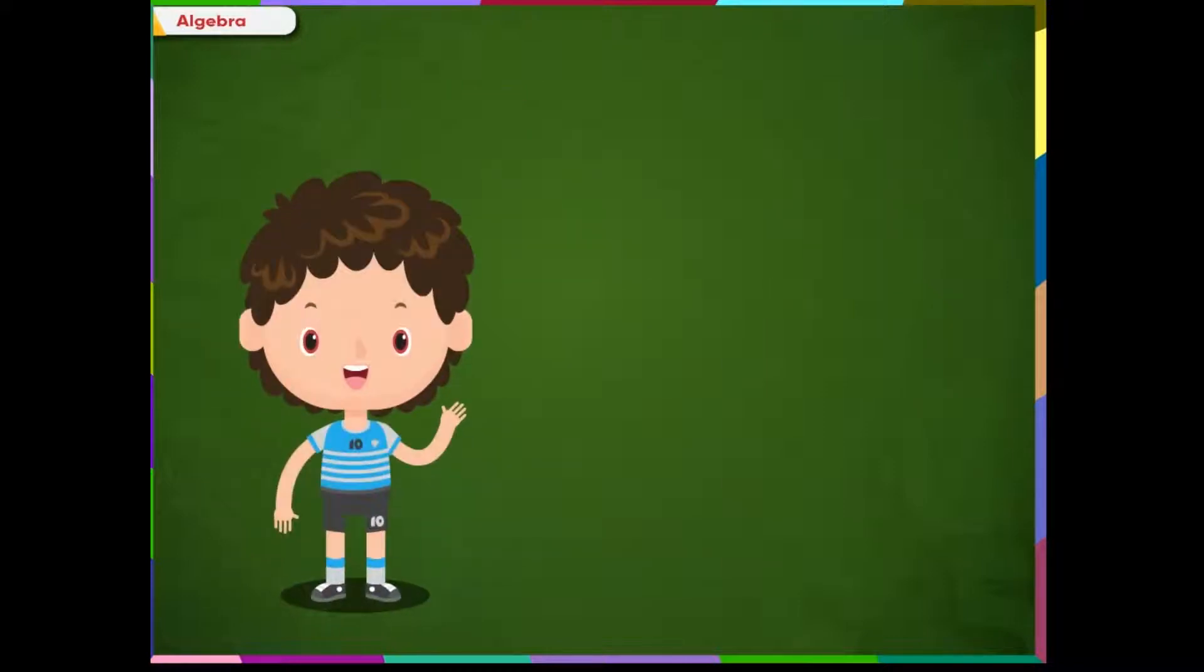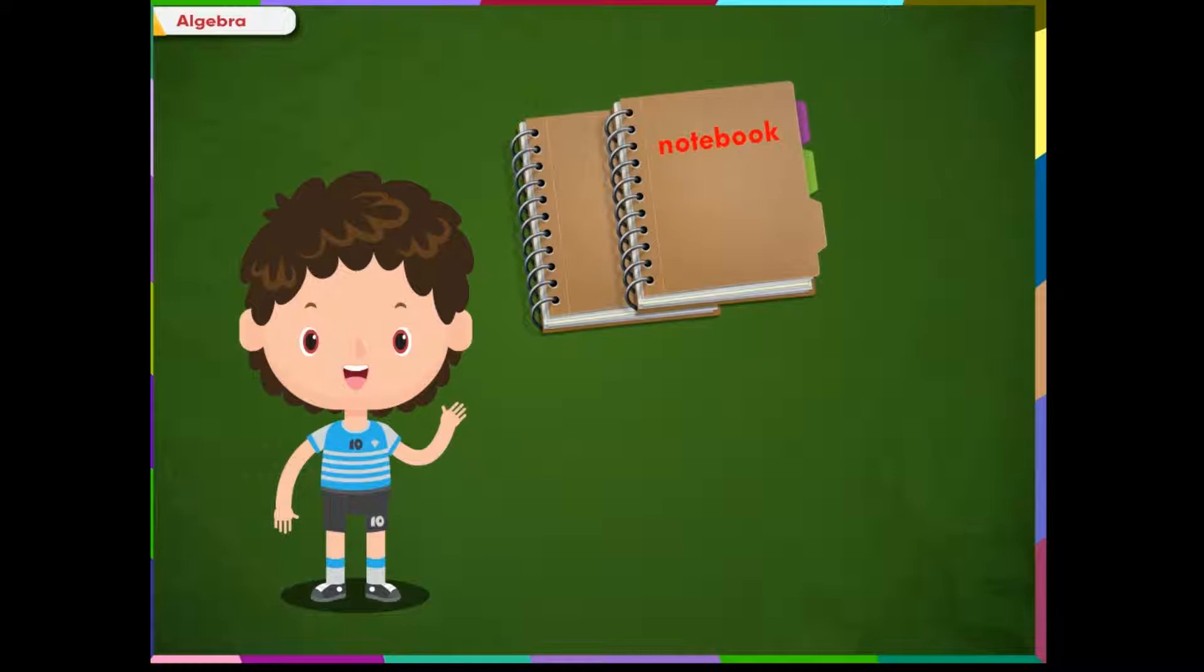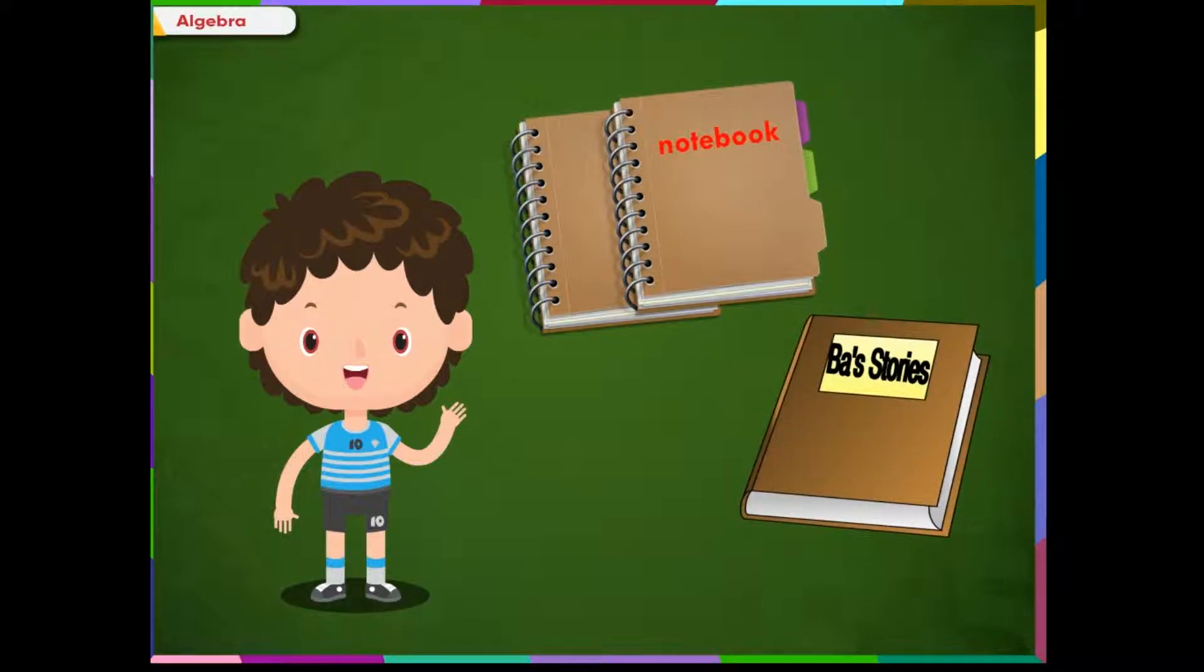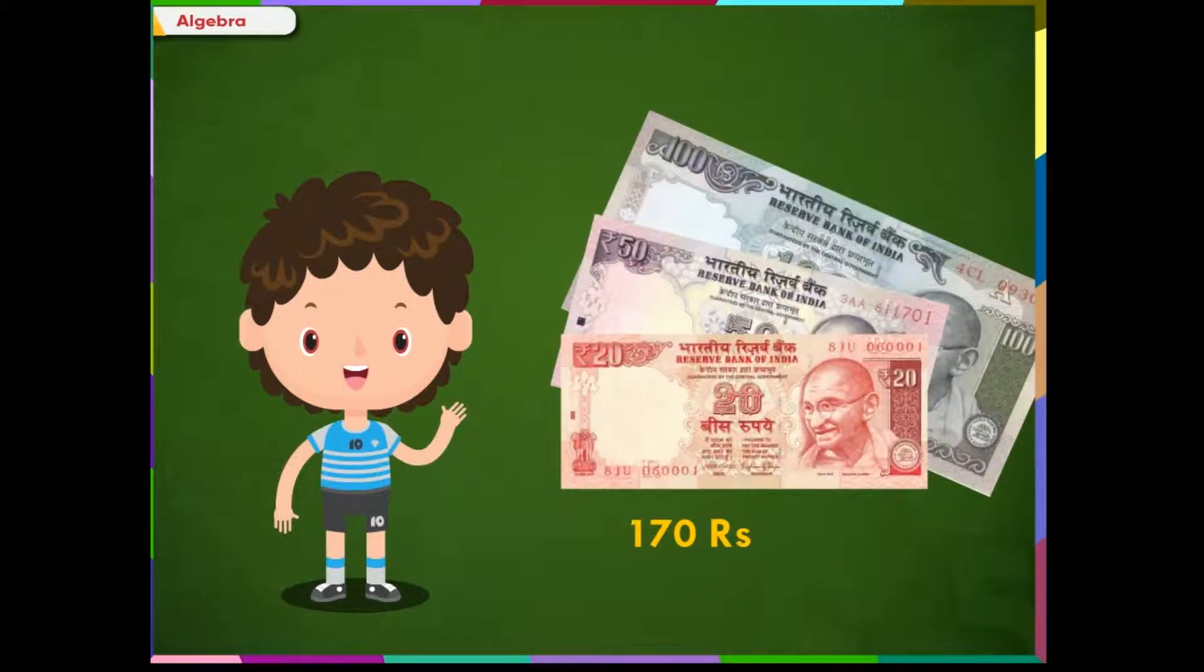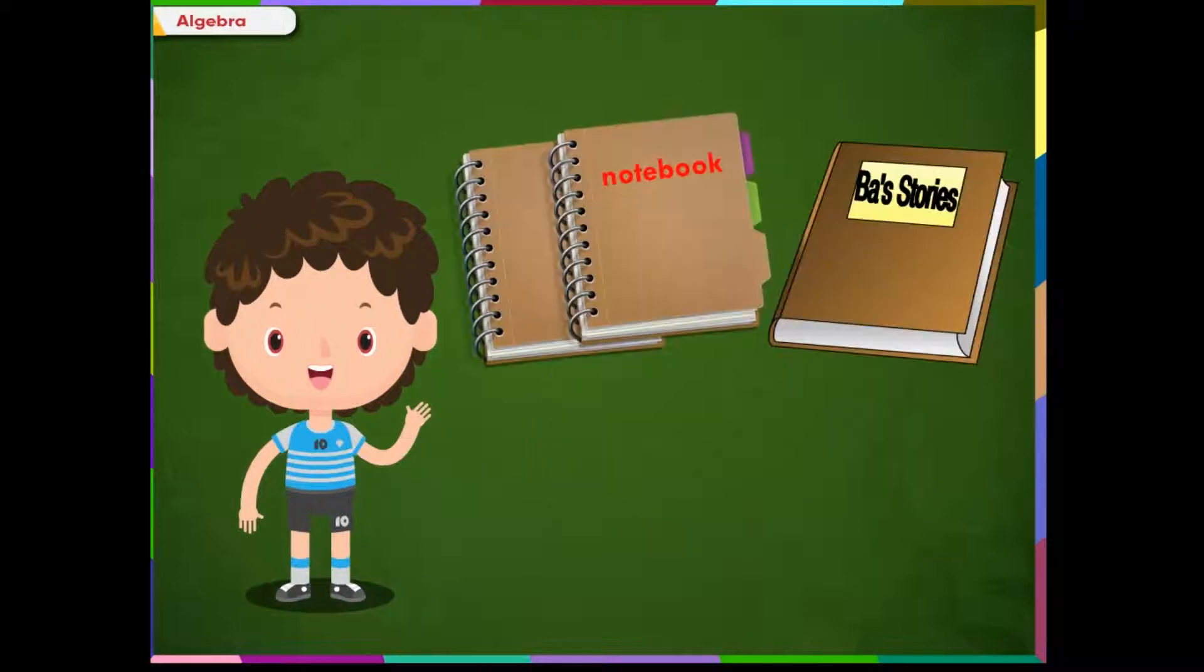Mohan went to market to shop for a few types of stationery. He bought two notebooks and a storybook costing rupees 120. The cost of the notebook was not known, which we can consider as x. Mohan paid rupees 170 to the shopkeeper. Let us transform these verbal statements into an equation.